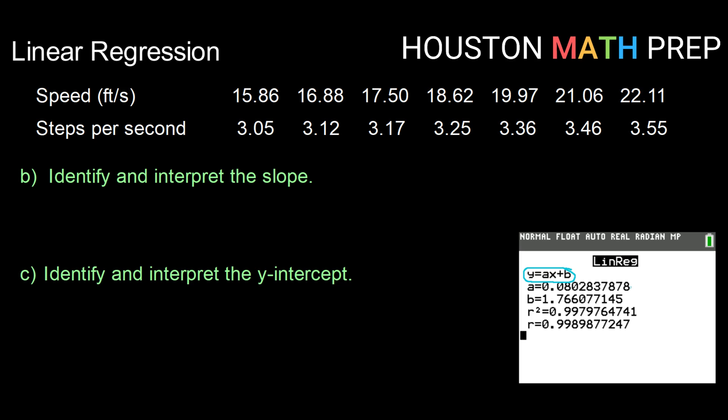So identify and interpret the slope. Okay, well, slope is our multiplier for x in our linear regression. So looking at the type of regression I have run, that means that a in this readout is going to be my slope. So my slope is 0.08 and then some additional variables. So I'm going to go ahead and write that here. My slope is 0.08.